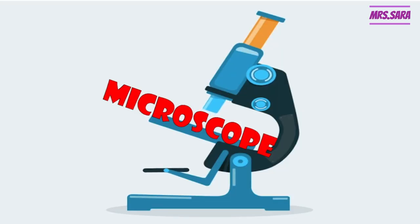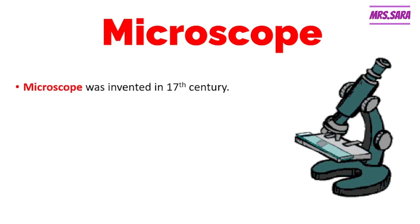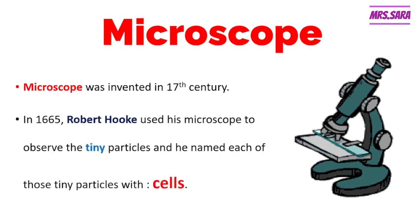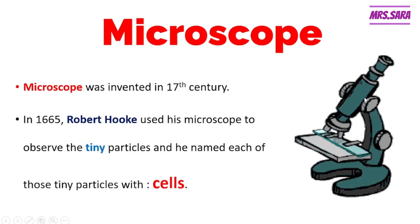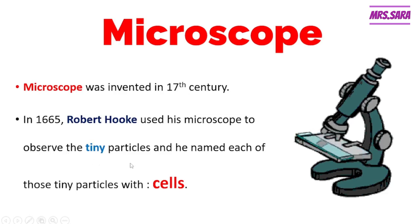Hello, Primary Six! I'm Sara, I'm teaching science, and today we're going to talk about the microscope. The microscope was invented in the 17th century. In 1665, a scientist called Robert Hooke used his own microscope to observe tiny particles, which he later named cells.